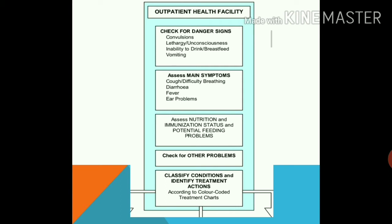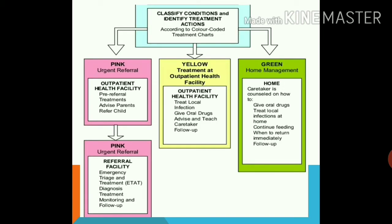For the 2 months to 5 years group we check general danger signs — convulsions, lethargic, unconscious, inability to drink or breastfeed, vomiting — then assess for main symptoms: cough, difficulty breathing, diarrhea, fever, ear problems. We also assess for nutrition and immunization status and potential feeding problems, then check for other problems, classify conditions, and identify treatment actions using the color-coded chart. The color-coded treatment is the same as for 0 to 2 months.